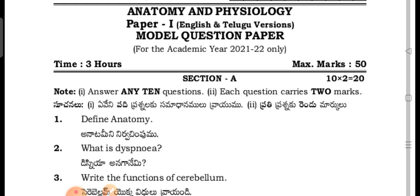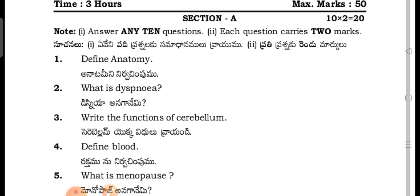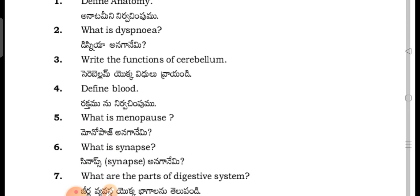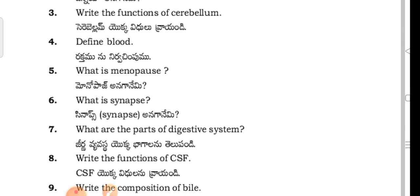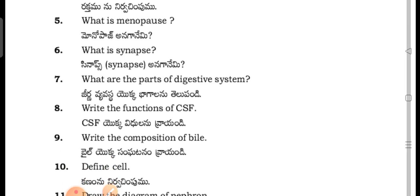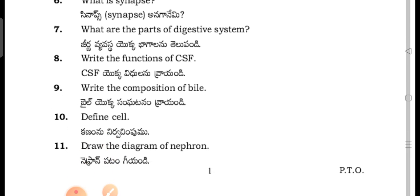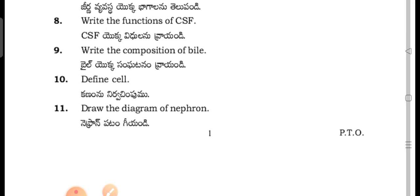Section A: Define anatomy. What is anatomy? Write the functions of the cerebellum. What is menopause? What are the synapses? What are the parts of the digestive system? Write the functions of the CSF. Write the composition of bile. Define cell.